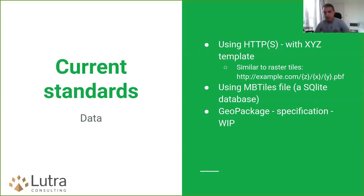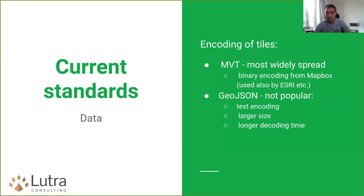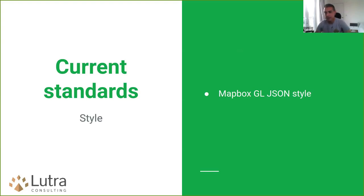There are a number of standards to create and serve map tiles, either using HTTPS similar to raster map tiles using zoom level and tile address, or the MBTiles format where vector tiles are packaged inside a SQLite database. The OGC is also working on a specification for adding vector tiles directly into a package. For encoding, the two common ways are Mapbox Vector Tile, which is widely used, and GeoJSON, which is text-based and produces larger tiles. The most common styling format is Mapbox GL JSON style.